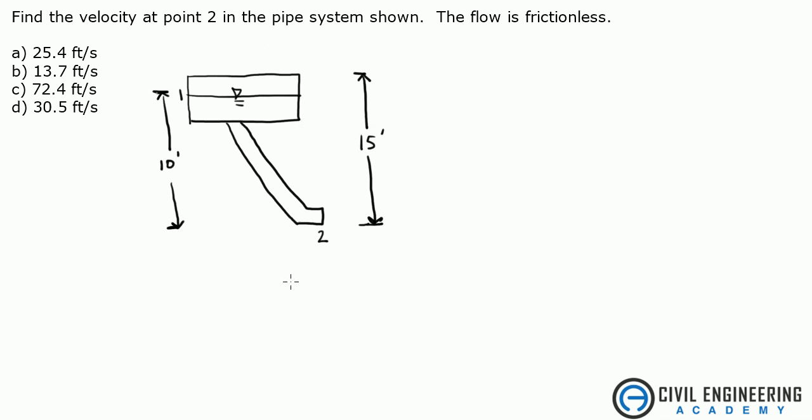So what we have here is basically a system of pipes. We've got some water up here and it's asking for us to find the velocity at point 2, which is down here, and they've given us some dimensions.